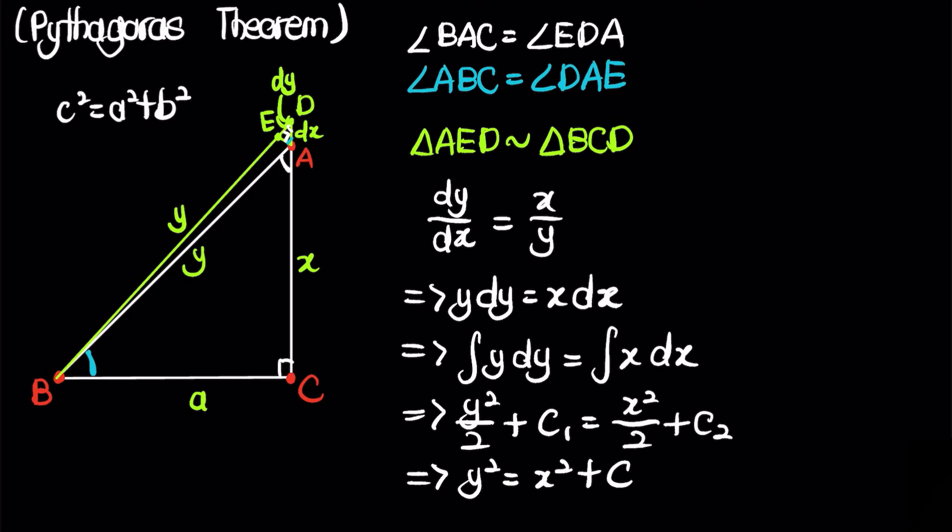And then now we want to deduce the constant c is equal to a squared. So the way that we can figure out c is that if we have x is equal to 0, which let's say we have a degenerate triangle, which in this case if x is equal to 0, then A and C are at the same point. So if x is equal to 0, then obviously the length y will be equal to a, because BA is equal to BC. So now in this case, if we look back at this equation, we'll have that a squared is equal to c.